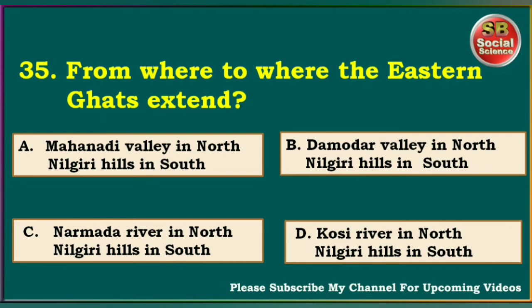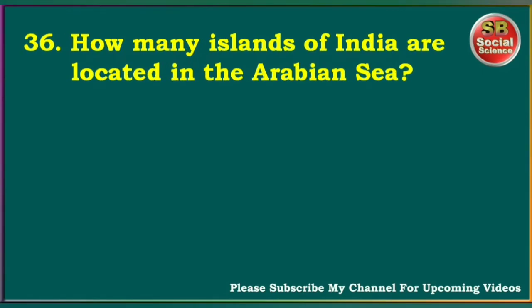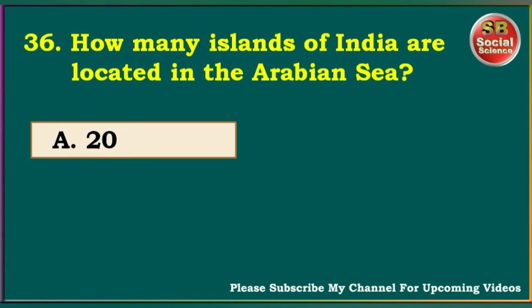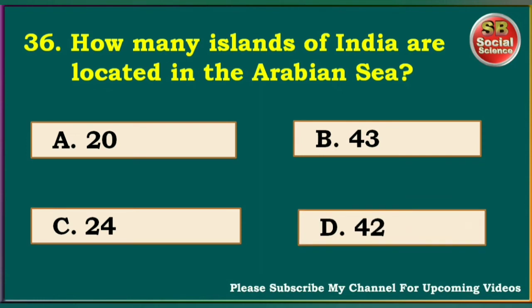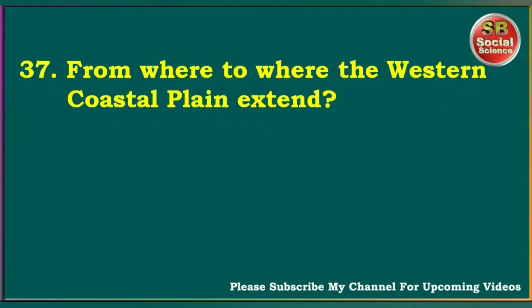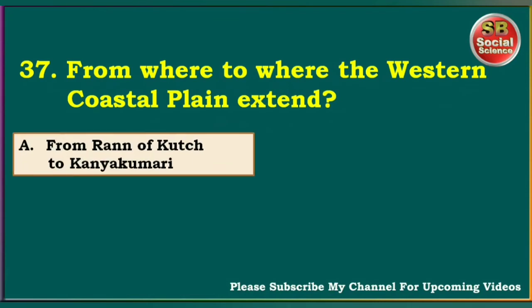The answer is Mahanadi Valley in North to Nilgiri Hills in South. How many islands of India are located in the Arabian Sea? 20, 43, 24, 42. The answer is 43.